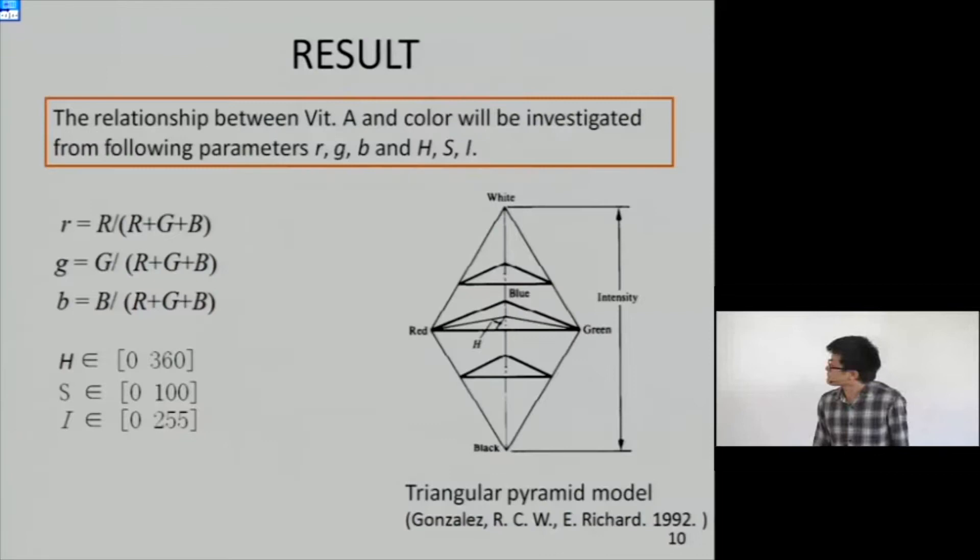The parameters we extracted from the image include red component ratio, calculated like this for RGB color space. For HSI color space, there are different HSI color models. We use the triangular pyramid model, and the range of the values HSI are in this range.